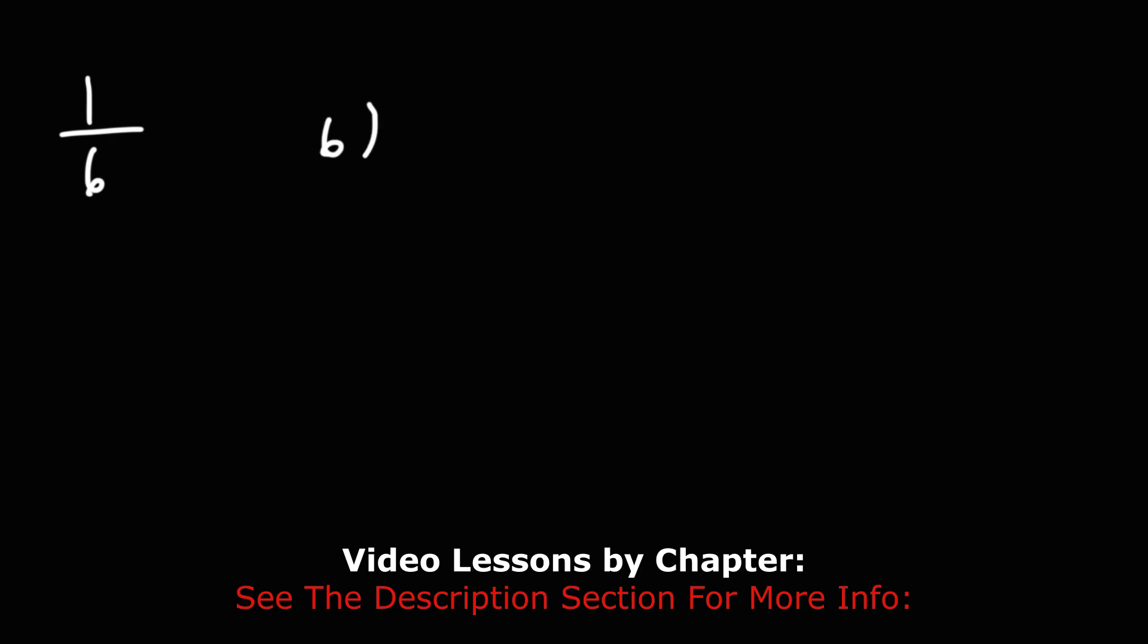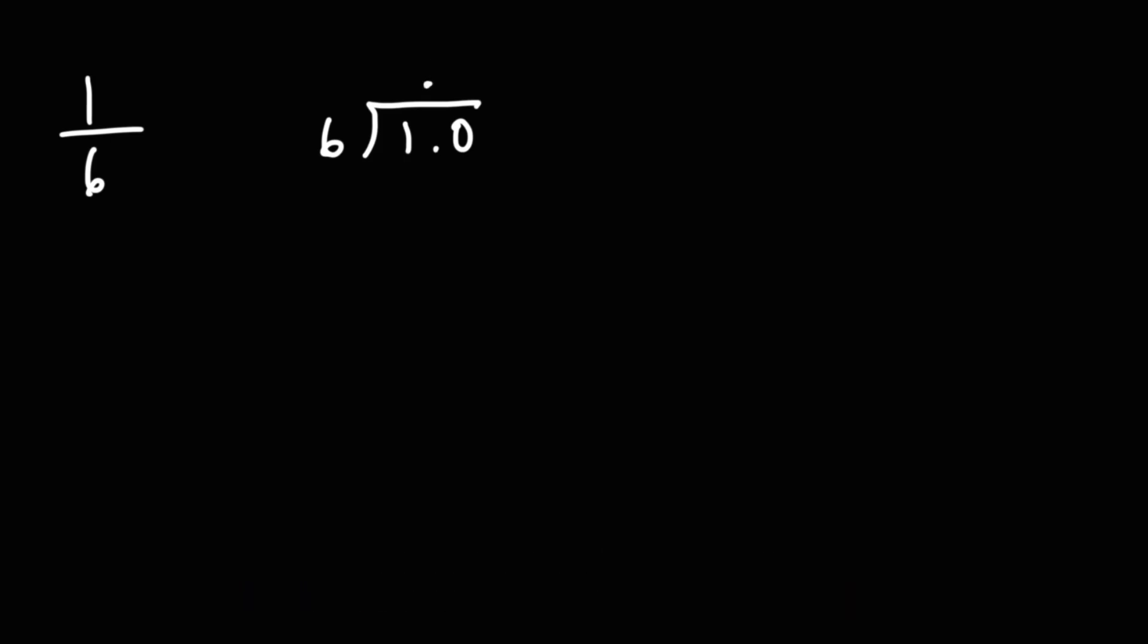Let's try this example. 1 over 6. Go ahead and convert that to a repeating decimal. So let's divide 1 by 6. So 6 is the divisor, 1 is the dividend. We need to add a 0 and a decimal point. Now, how many times does 6 go into 10? 6 goes into 10 one time.